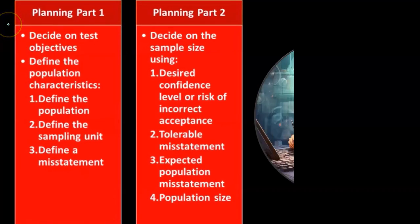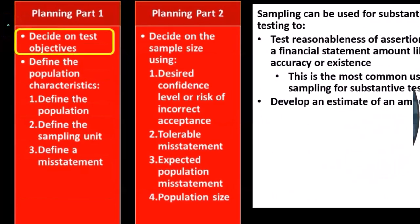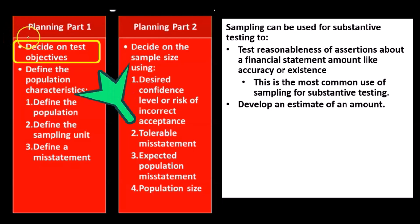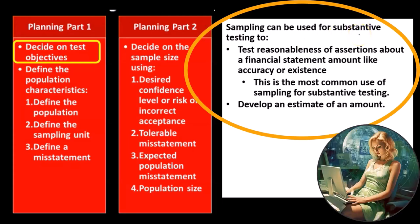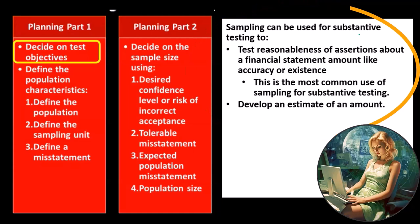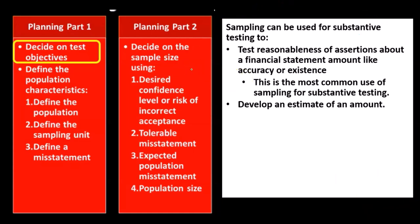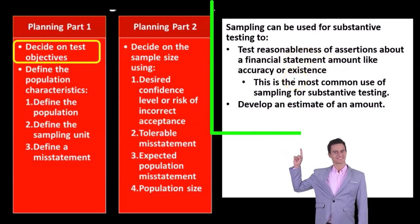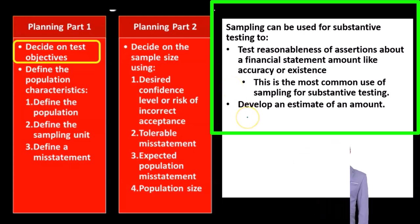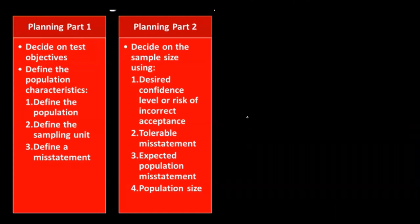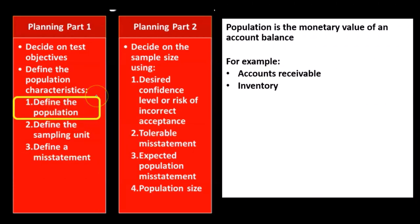Now we're going to keep in the planning phase and consider deciding on test objectives. Sampling can be used for substantive testing — remember we're in substantive testing as opposed to testing of controls — to test the reasonableness of assertions about a financial statement amount. We're often considering accuracy or existence of an amount. However, we can also develop an estimate of an amount using this method.